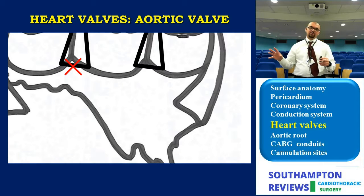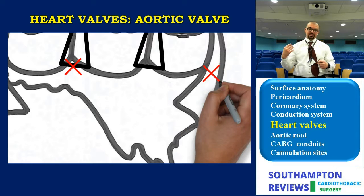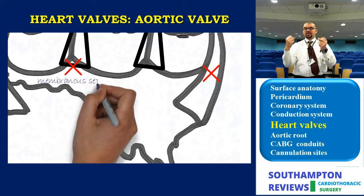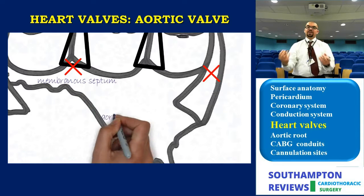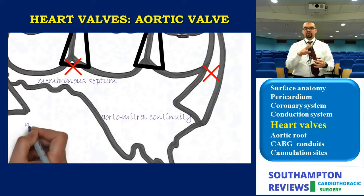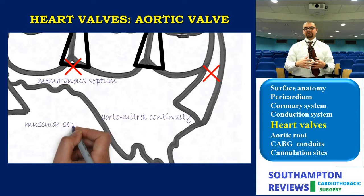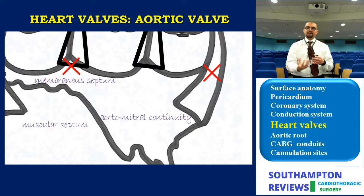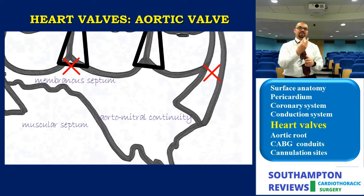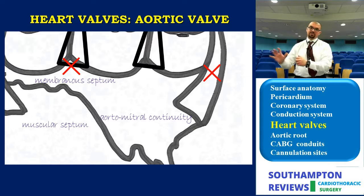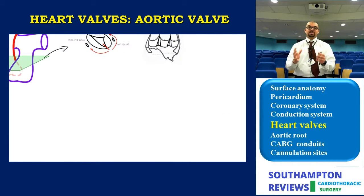The membranous septum, the aorto-mitral curtain, and the muscular septum — explained before in the fibrous skeleton section — extend upward from the medial and lateral fibrous bodies to create the inter-leaflet triangles. Two of these are mainly fibrous, while one — between the right and left coronary cusps — is actually muscular, sprouting up from the muscular septum. This is important to understand when explaining how the inter-leaflet triangles affect the hemodynamics of the aortic root.